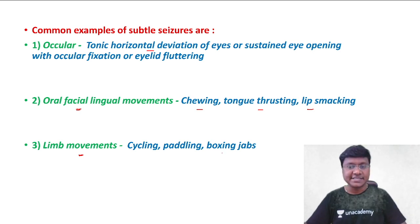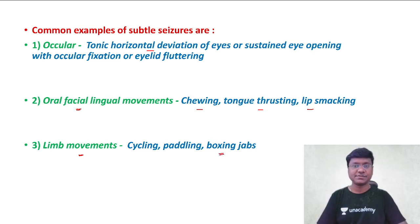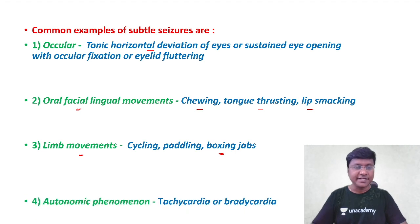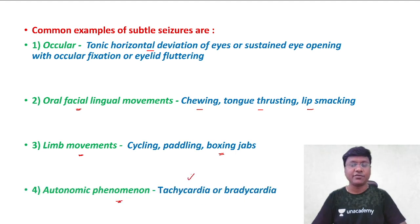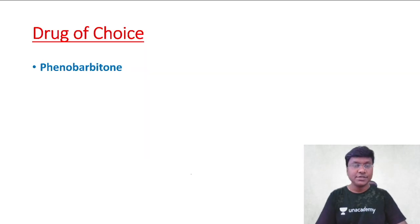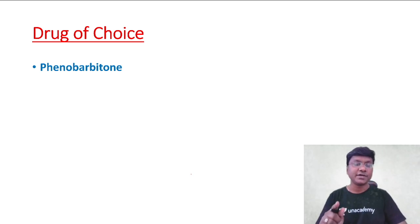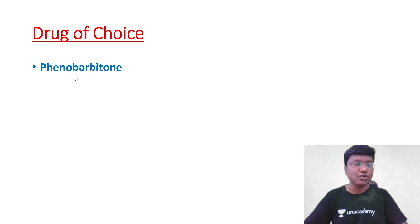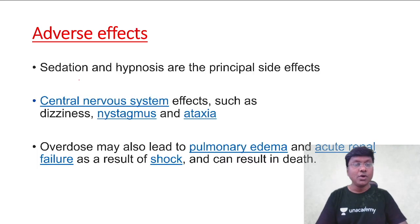The limb movements — as shown in the clinical sign — appear in the form of boxing jabs. The autonomic phenomenon manifests as either tachycardia or bradycardia. The drug of choice for subtle seizures in a newborn is phenobarbitone.